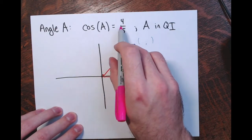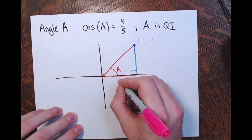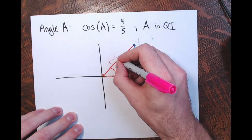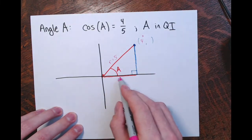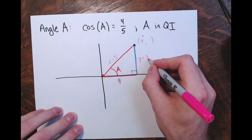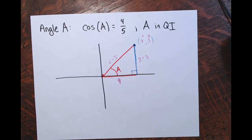The cosine of A is four-fifths, so the adjacent length is 4 units and the hypotenuse R equals 5. The x-coordinate is 4, the hypotenuse is 5, and you can use the Pythagorean theorem to find that the y-coordinate is 3. It should be a positive y-coordinate because we're in quadrant one. That's all the information I need for angle A — I've found all the side lengths.